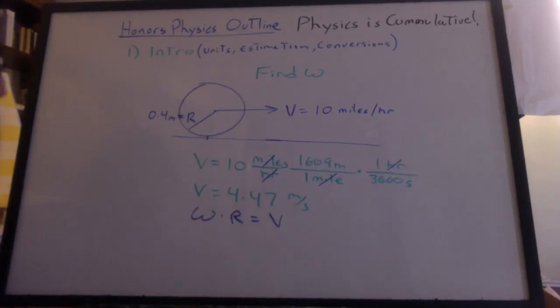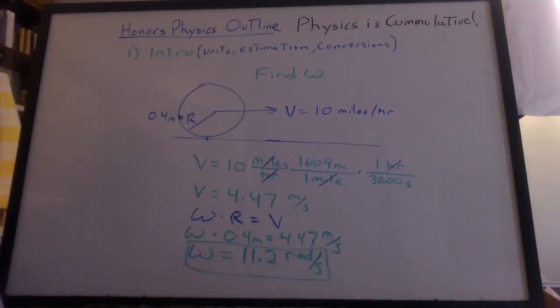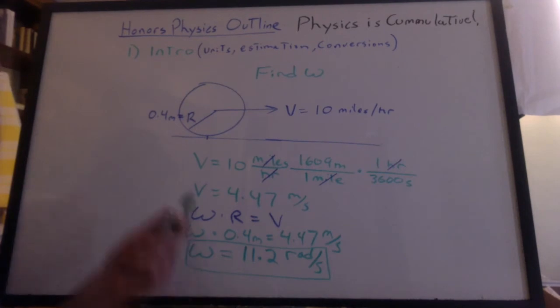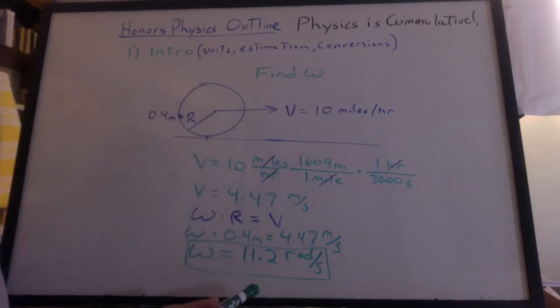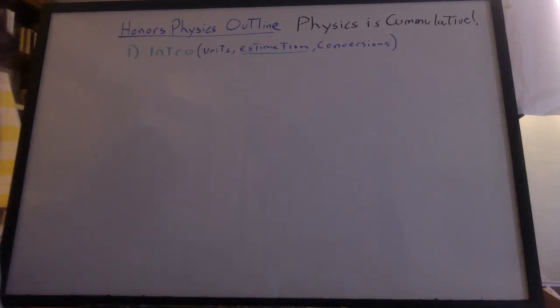And we get 4.47 meters per second. Now we can solve the problem. We know omega times r equals v. Now we can solve for omega, and we get 11.2 radians per second. So let's be clear - we've been using units and conversions all throughout the year. And now, how about estimation?